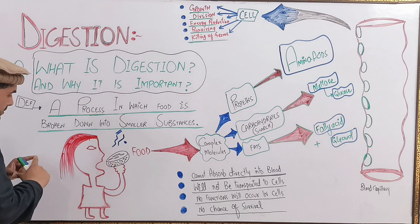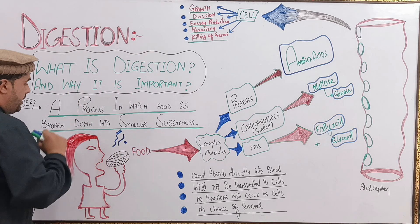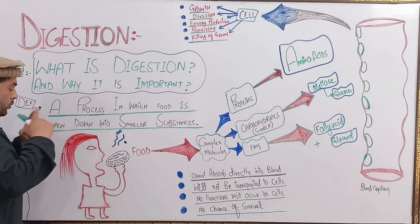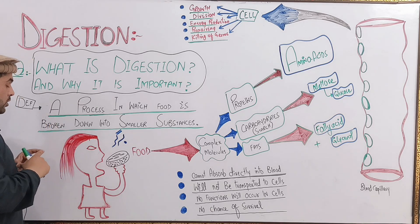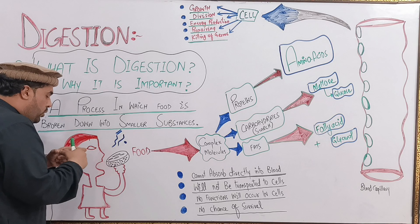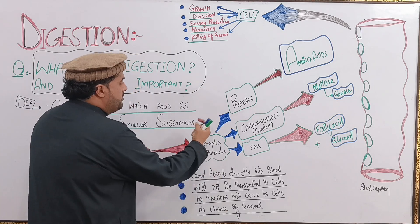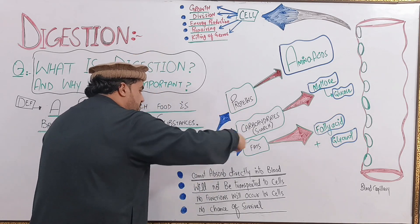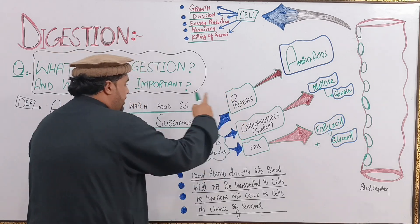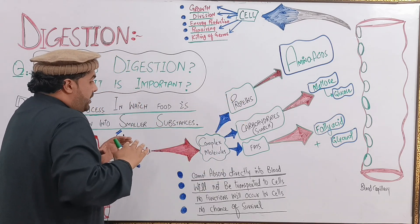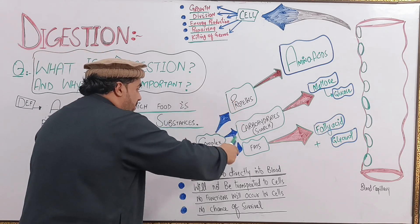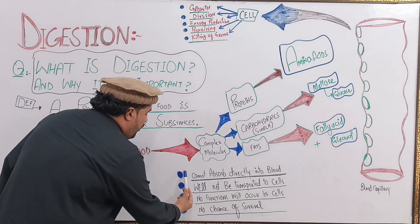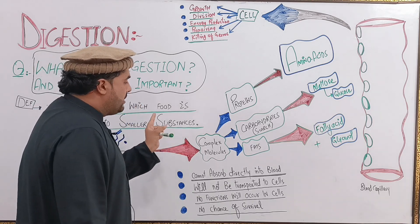Let's suppose a burger. A burger contains protein, carbohydrates, and fats — these are complex molecules. The digestion process is needed to break down these complex molecules. Basically, the total concept of the digestive system involves breaking down these complex substances.